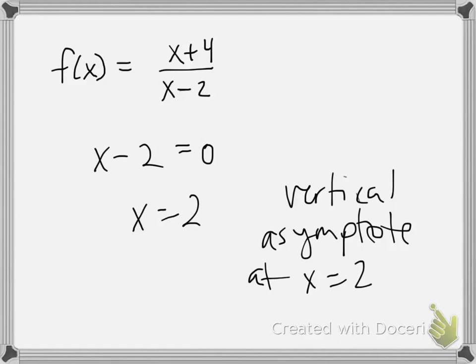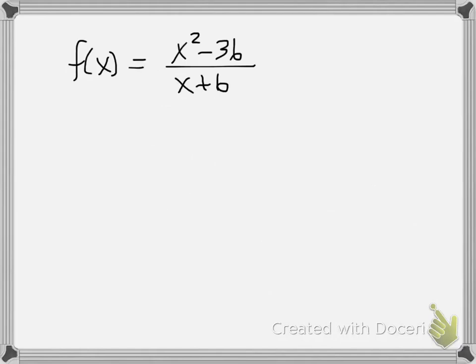So let's talk about where the holes in the graph come up. Let's take a look at this function where we have f(x) equals x squared minus 36 all divided by x plus 6. Well, for starters, I'm going to factor that numerator into x plus 6 and x minus 6, and I'm going to copy my denominator as x plus 6.